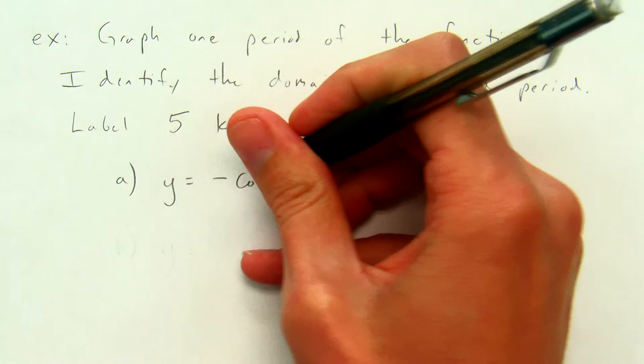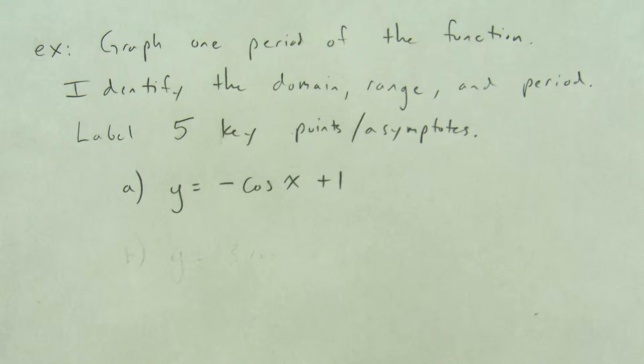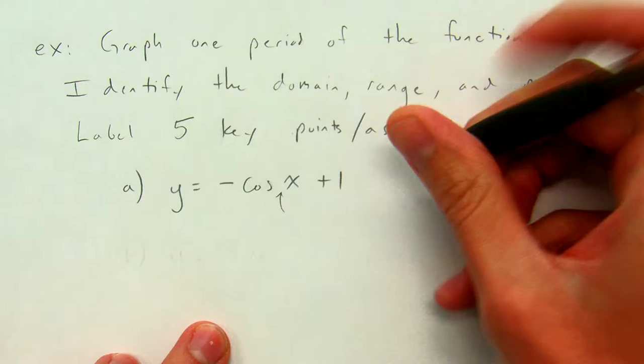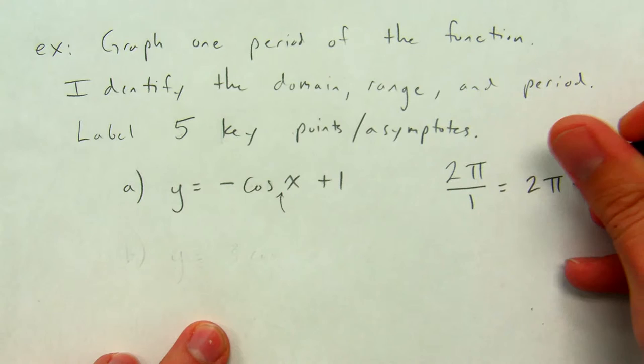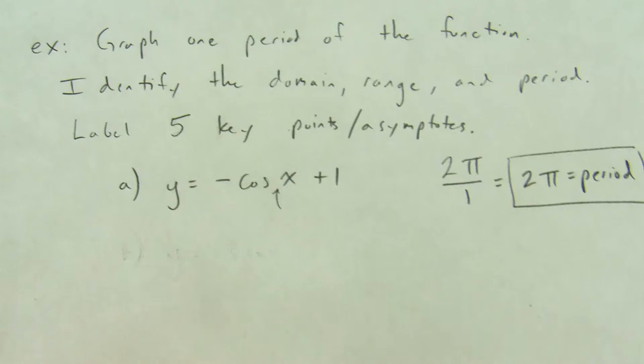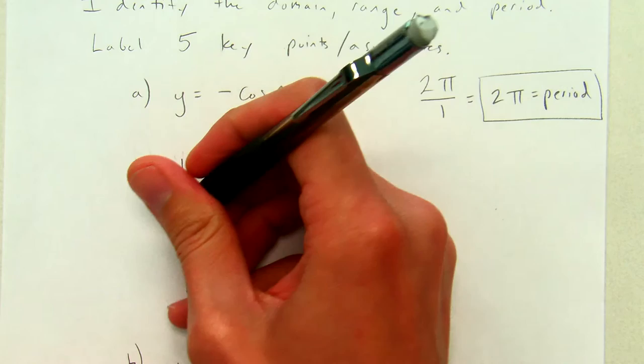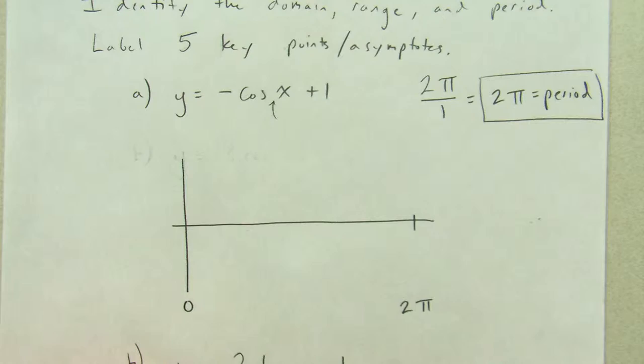Okay. You know what? Since we just did sine, let's change this to cosine. So, the first one we're going to do is y equals negative cosine of x plus one. Let's start like we always do by figuring out what the period is. B is the coefficient of x. I don't see any number there, which means it's one. So, the period here is just two pi over b, two pi. That's my period. Which is kind of familiar. That means I get to have my graph go from zero all the way up to two pi.